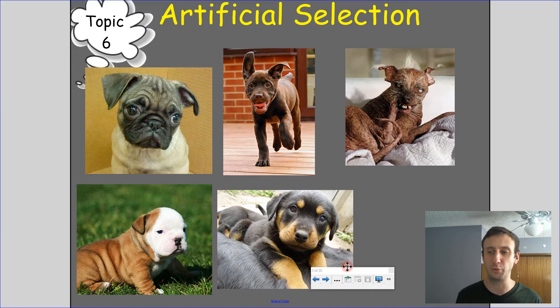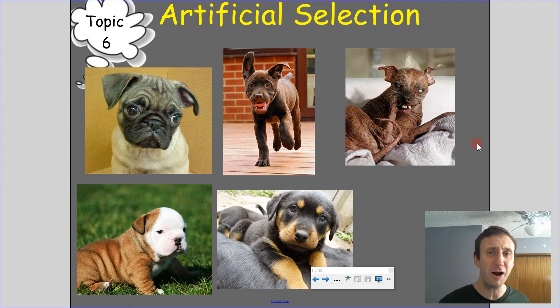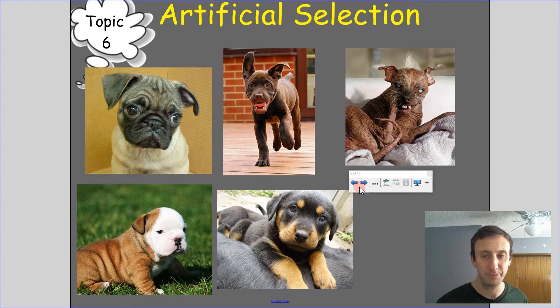Basically what happens with dogs, or all of our domestic animals, is that the animals that have the traits wanted for that breed end up getting selected, and those are the ones that actually mate. That happens over and over again until we get animals that look very far from the original wolf species they came from — and yet it is still the same species.